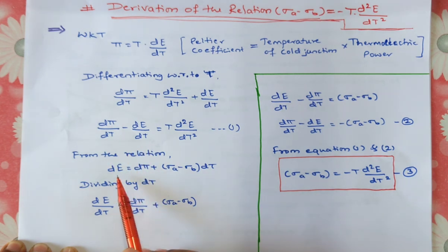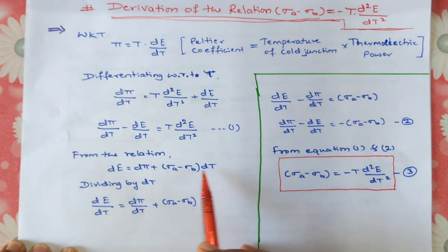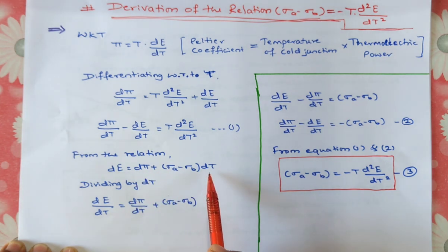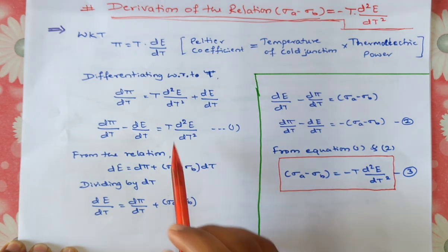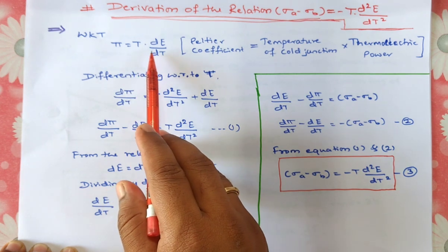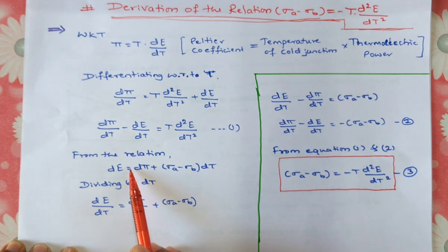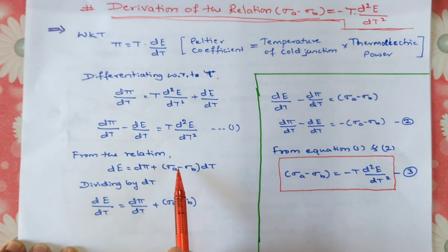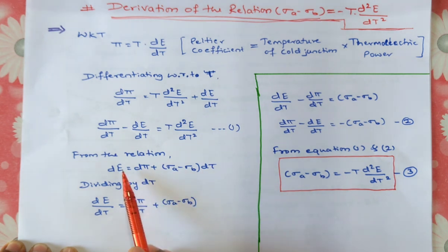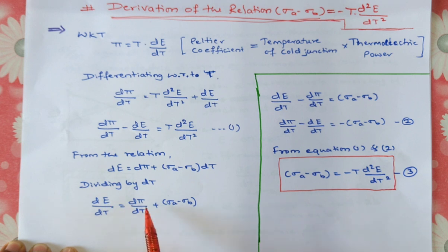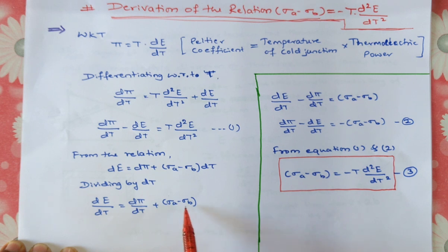From the relation d e is equal to d pi plus sigma a minus sigma b times dt — this we have already discussed in the previous video lecture while discussing the derivation of pi equal to t into d e divided by dt, which represents the total energy absorbed used in establishing the potential difference d e in the thermocouple. Now dividing this relation by dt, we get d e divided by dt is equal to d pi divided by dt plus sigma a minus sigma b.